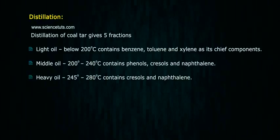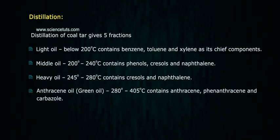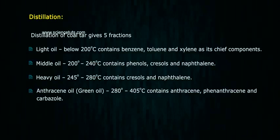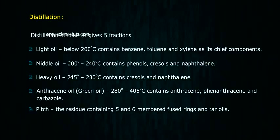Heavy oils (245°C to 280°C) contain cresols and naphthalene. Anthracene oil or green oil (280°C to 405°C) contains anthracene, phenanthrene, and carbazole. The residue contains 5- and 6-membered fused rings and tar oils.